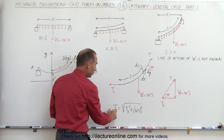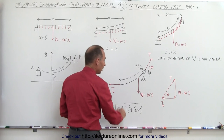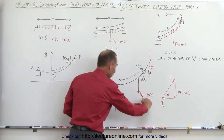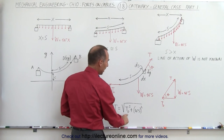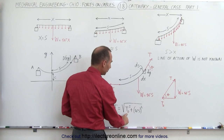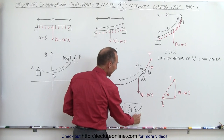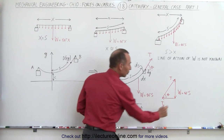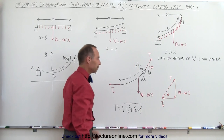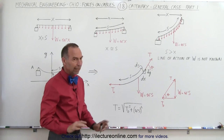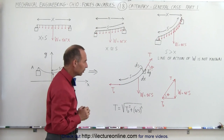Notice also that we can find the tension at any point in the cable. T squared equals T₀ squared plus (ωs) squared, so if we take the square root: T equals the square root of T₀ squared plus (ωs) squared, where ωs is of course the weight of the cable. Later on we'll show you how to calculate all those other parameters.